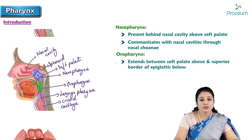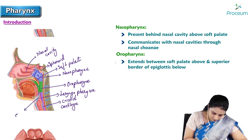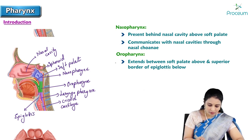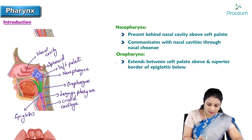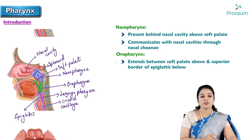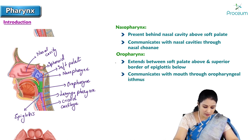Oropharynx extends between the soft palate above and the superior border of the epiglottis below. It extends till the superior border of the epiglottis. The green colored structure is the oropharynx, and it communicates with the mouth through the oropharyngeal isthmus.